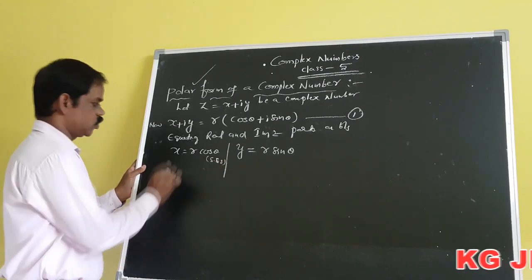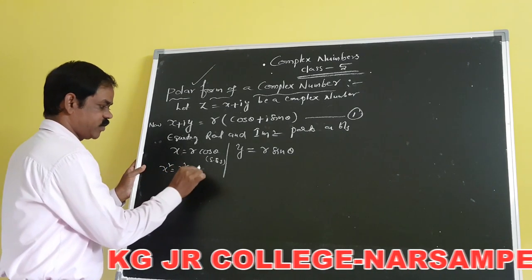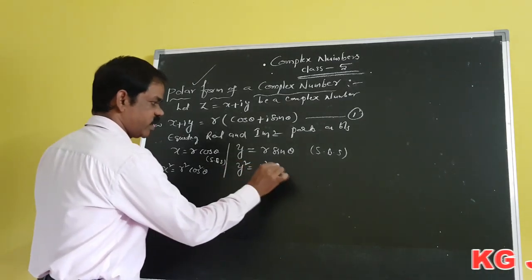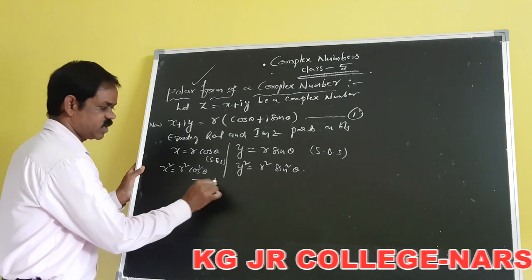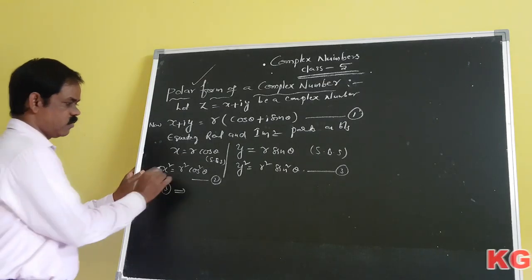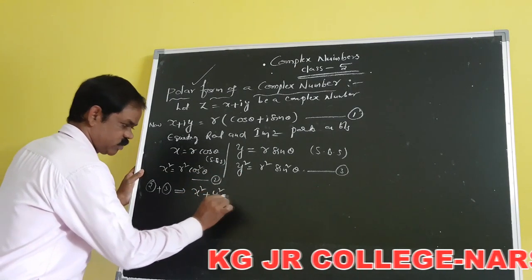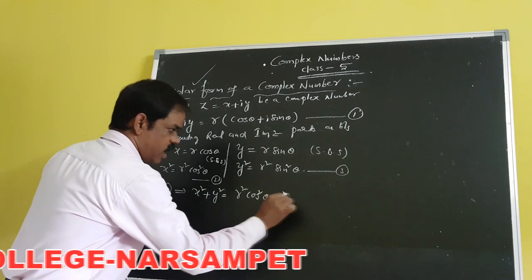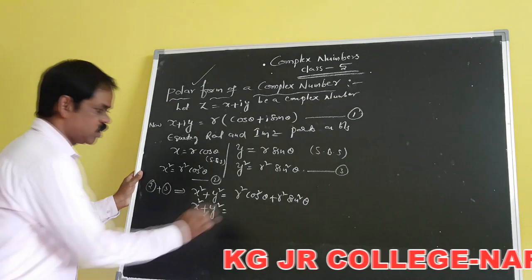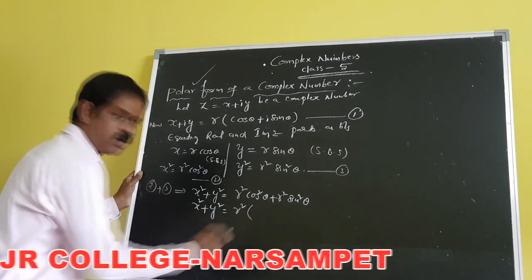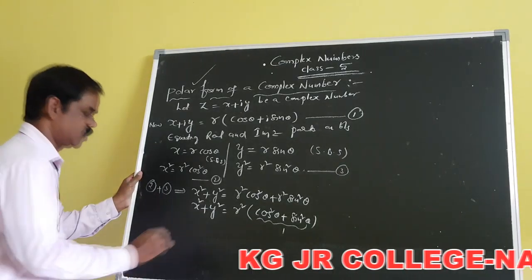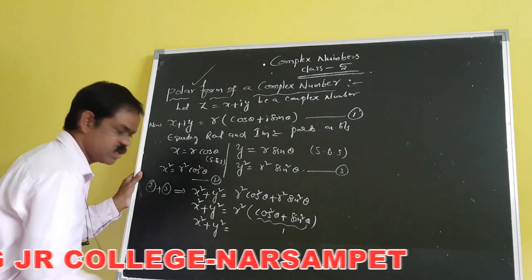Squaring both sides of both equations, we get X² equals R² cos²θ and Y² equals R² sin²θ. Let these be equation 2 and equation 3. Adding both equations, the left-hand side gives X² plus Y², and the right-hand side gives R² cos²θ plus R² sin²θ, which equals R² times (cos²θ plus sin²θ), and since cos²θ plus sin²θ equals 1, we get X² plus Y² equals R².